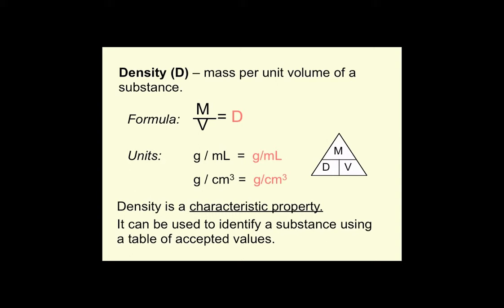The units of mass are grams. The units of volume are either milliliters for liquids or cubic centimeters for solids. So when we take mass divided by volume, the units grams divided by milliliters gives us the density of a liquid, grams per milliliter. Or for a solid, mass in grams divided by volume in cubic centimeters gives us units of grams per cubic centimeter.